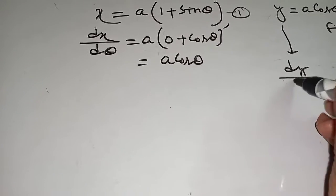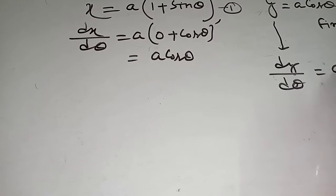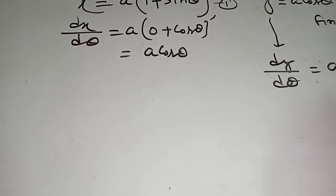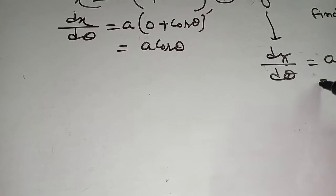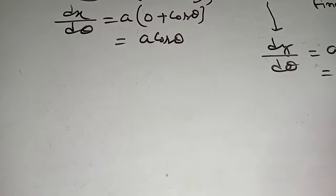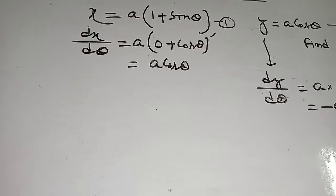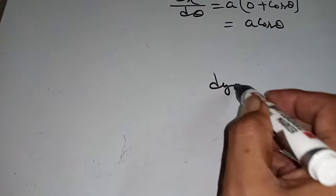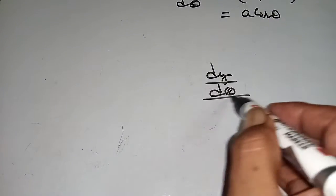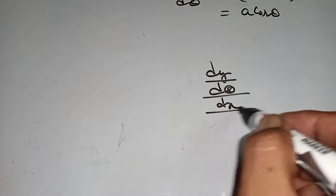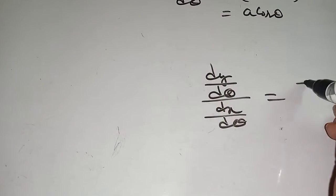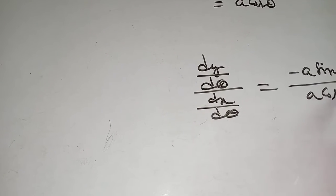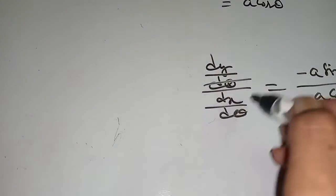dy d theta equal to a constant, now dx of cos theta is minus sin theta, that is minus a sin theta. Divide dy d theta by dx d theta, it will be equal to minus a sin theta by a cos theta. d theta d theta cancels as they are the same.